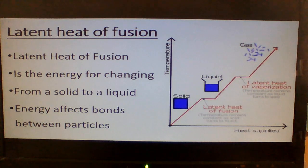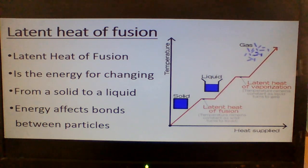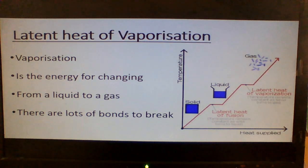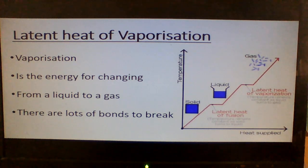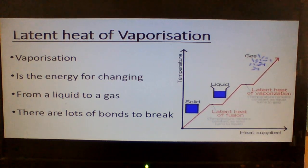Latent heat of fusion is changing from a solid to a liquid. You're applying that heat energy, but it's being used to alter the bonds to turn from a solid to a liquid — the temperature doesn't increase. Latent heat of vaporisation: the energy is for changing from a liquid to a gas. You've got lots of bonds to break, so that energy is used to break the bonds. So, even though you increase the heat, the temperature does not go up.